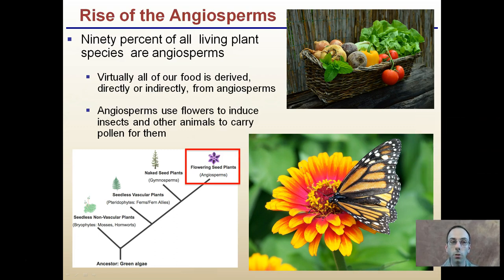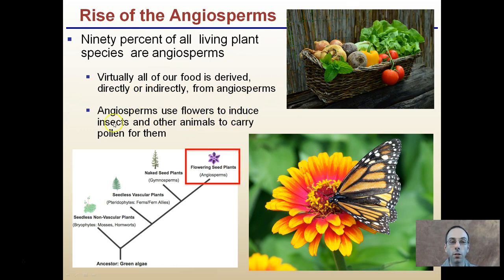In contrast, angiosperms produce flowers and invest a lot of energy in them to attract pollinators — a quite different reproductive strategy. 90% of all living plant species are angiosperms, and virtually all of our food is derived directly or indirectly from angiosperms. Instead of producing a massive amount of pollen and hoping it makes it on the wind, they invest their energy in producing less pollen while attracting pollinators.